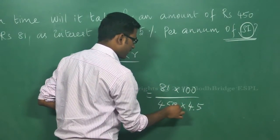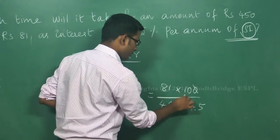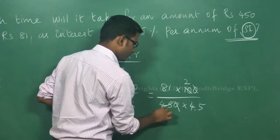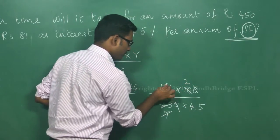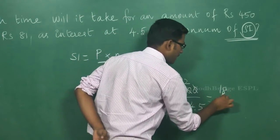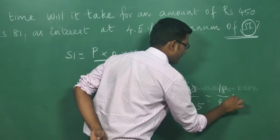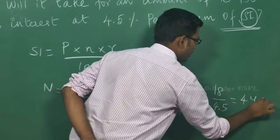Simplifying this you will get 81 into 100 by 450 into 4.5. That is 18 by 4.5. That is equal to 4 years.